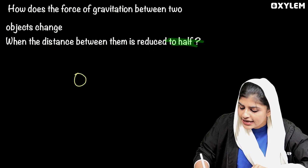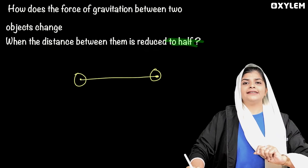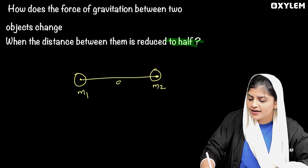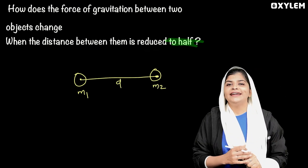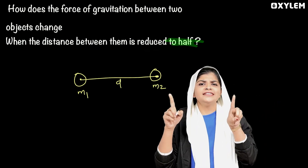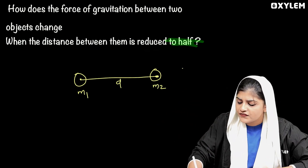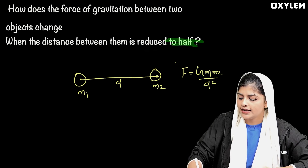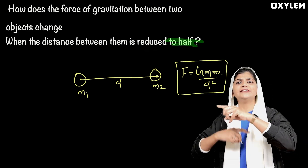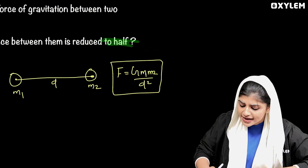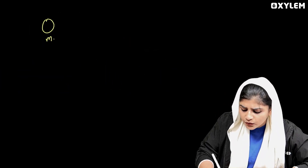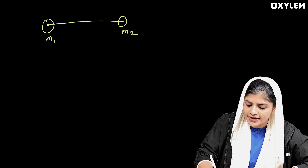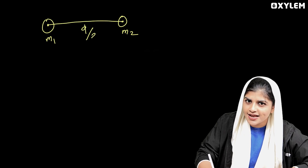The normal setup: the mass remains the same, but the distance is now half. The original force is F equals G into M1·M2 divided by D squared. The mass is the same, but the distance is now D over 2.